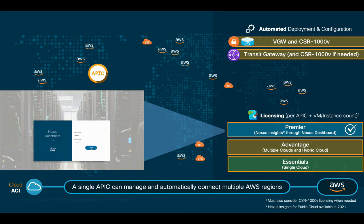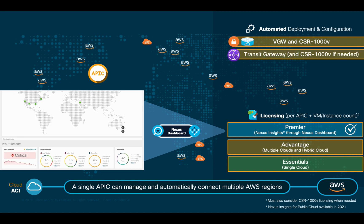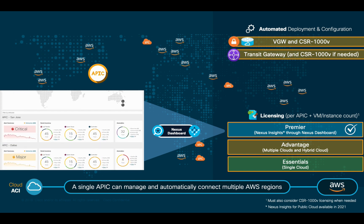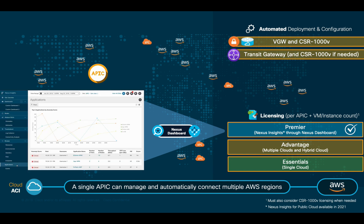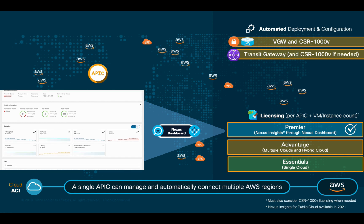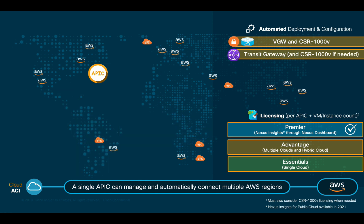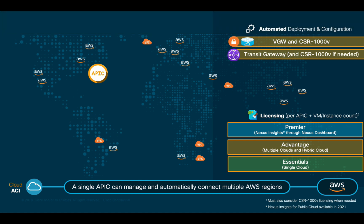Nexus Insights, running on Nexus Dashboard, provides artificial intelligence-based network telemetry and analytics. As of 2020, Nexus Insights is available for on-prem environments only, but public cloud integration is expected in 2021, which will deliver hybrid cloud visibility and a proactive operational model across clouds. We will cover Nexus Dashboard and Insights, as well as how it integrates to ACI, in Module 6.